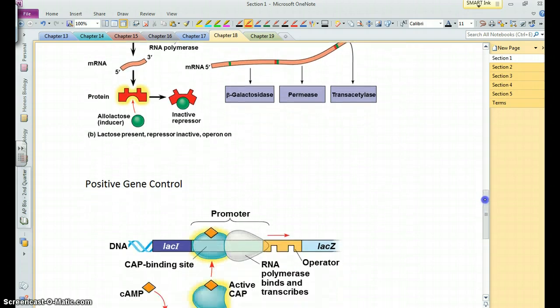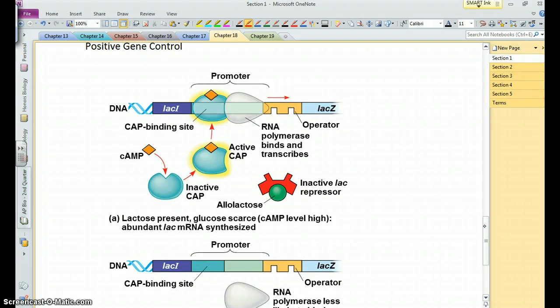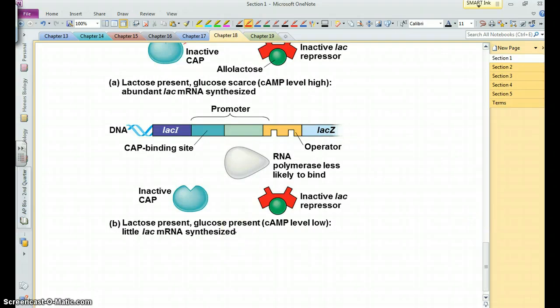Now, the lac operon also has another level of control, because these cells will make use of not only lactose, but glucose. If glucose is present, the cell prefers glucose over lactose. You'll notice here, in this situation, lactose is present and glucose is present. Lactose is present, so the repressor is inactivated, the operon should run, but it doesn't, because when glucose is present, there's this molecule called CAP, which is in an inactive state. And CAP is basically a transcription factor that helps polymerase do its job, and when it's inactive, polymerase can't do its job.